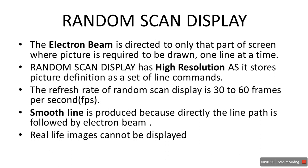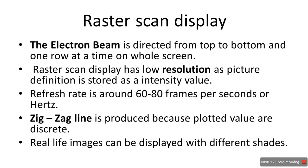Now we learn about raster scan display. The electron beam is directed from top to bottom, one row at a time, on the whole screen. In random scan display the beam only goes to where the image is drawn, but in raster scan display it covers the whole screen — not just the area where the picture is supposed to be drawn.